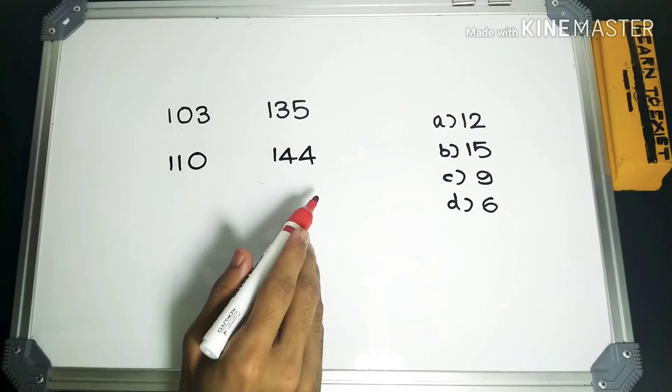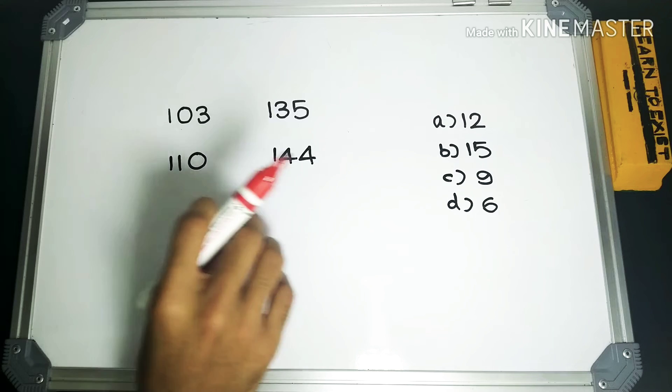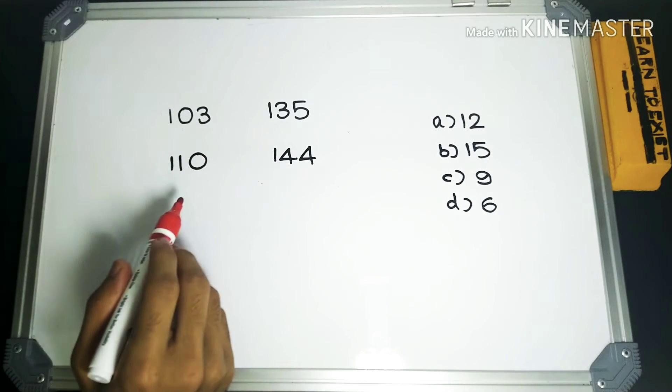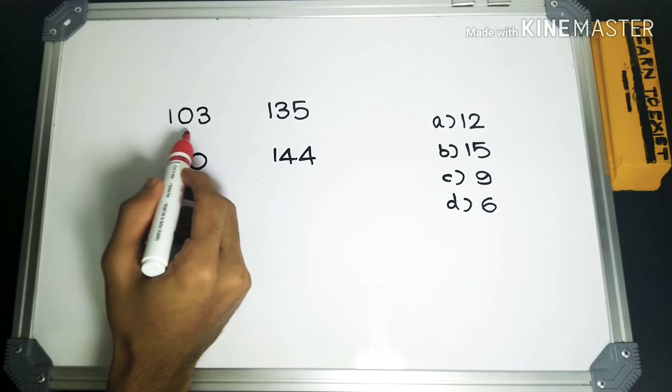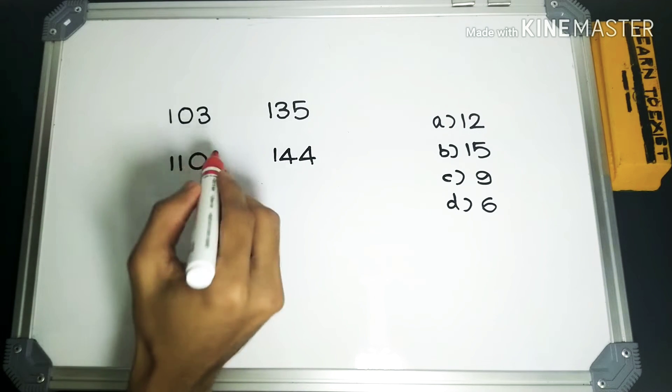I have written down the numbers in the question. You don't actually have to write this down while solving it, but I have done it for the sake of explanation. In our question, 103 was at the beginning and 144 was at the end, so I have placed them here at the diagonal ends.